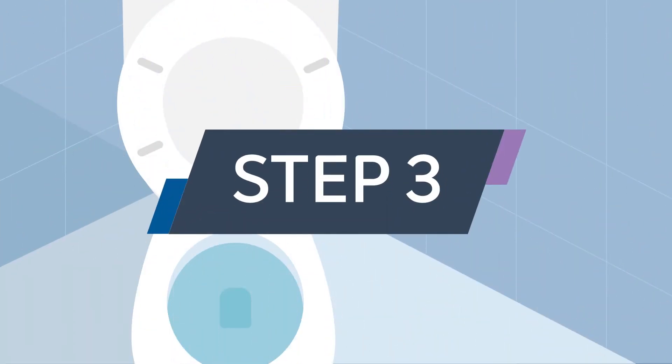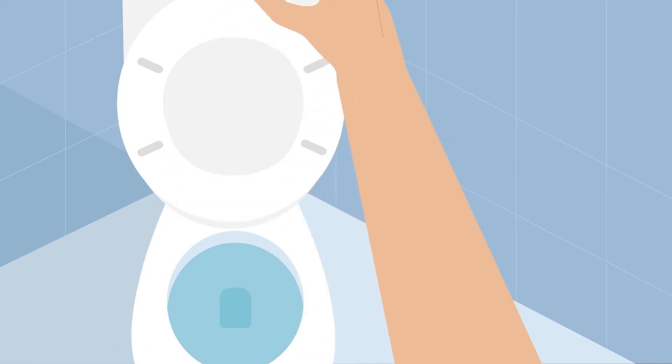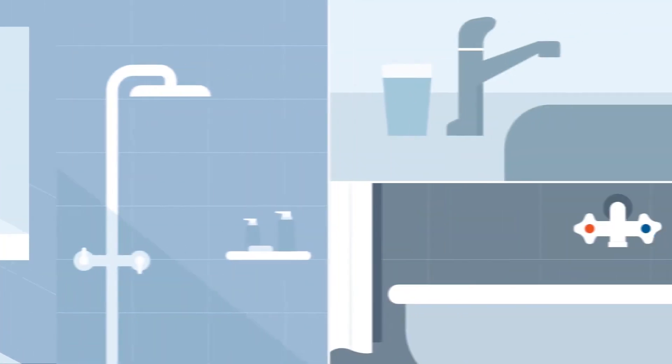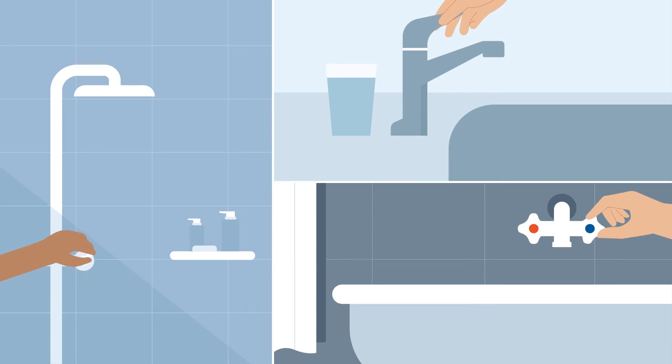Step 3. After all taps have run dry, flush all toilets. Toilets should refill as normal as they should be connected to the recycled water supply. You can now turn your inside taps back off.